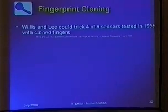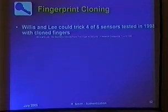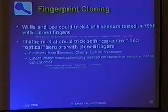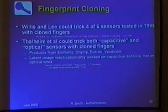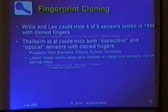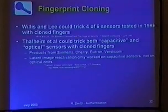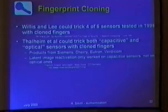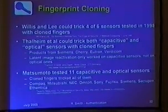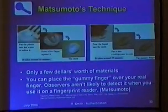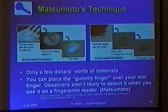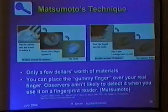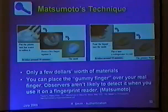Fingerprint cloning: several things have been done. Willis and Lee did work in 1998. Fallheim in Germany tried both capacitive and optical sensors, finding you could hold a plastic bag of warm water against a capacitive sensor and cause it to detect the previous fingerprint that was used to authenticate. Matsumoto tested 11 sensors against his cloning technique: buy some modeling plastic, get gummy bear-style gelatin from the grocery store, and build a thin gummy finger you put over your fingertip. If nobody's looking too closely, you can authenticate with it even in the presence of witnesses.